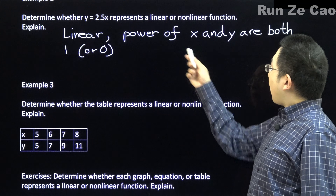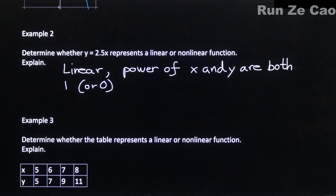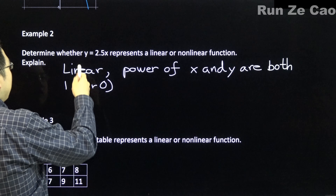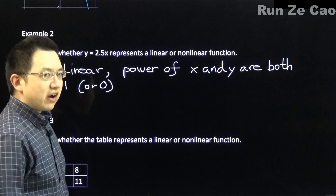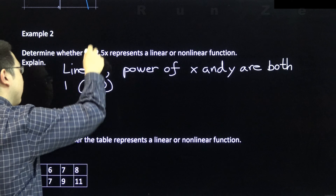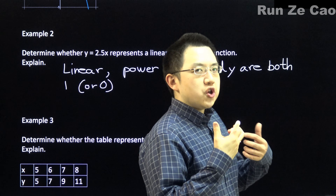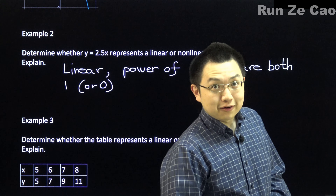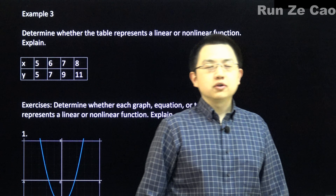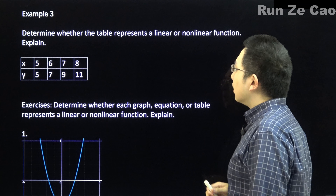Another thing: the power of y being 1 is usually assumed at this level. But imagine if it was y² = 2.5x — if you want to represent y, you'd have the square root of 2.5x, which would not be linear. Speaking of root of 2.5x, we'll be doing those roots a little later.